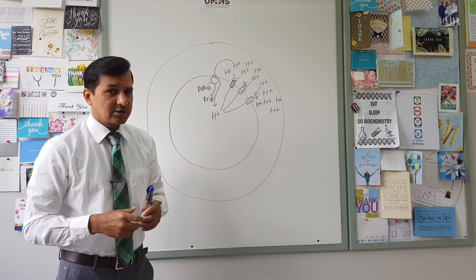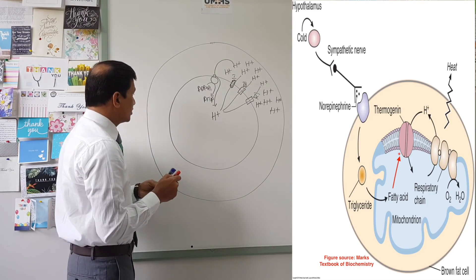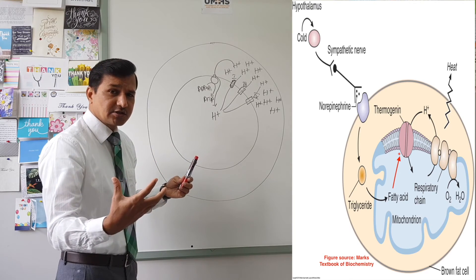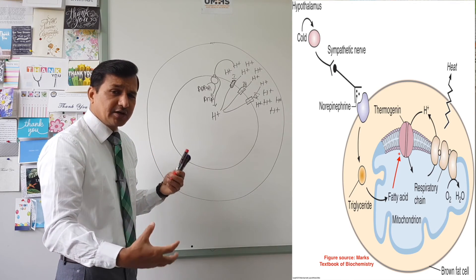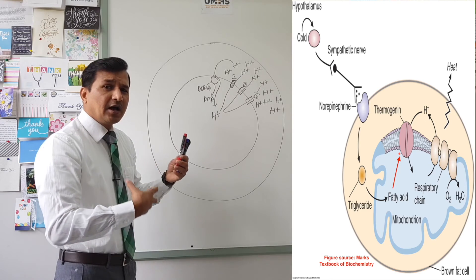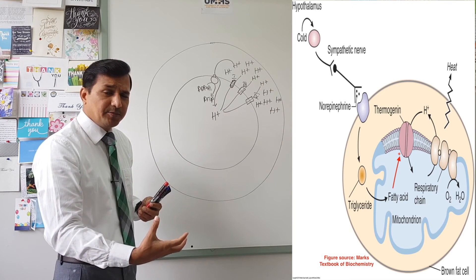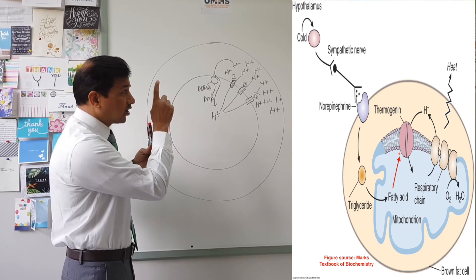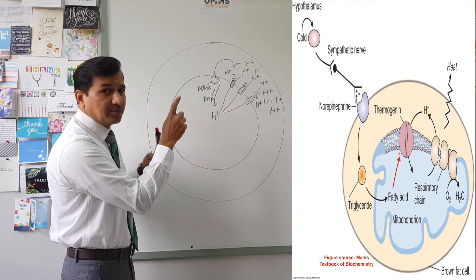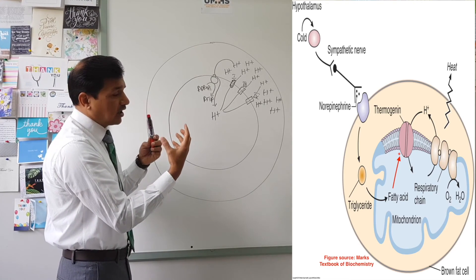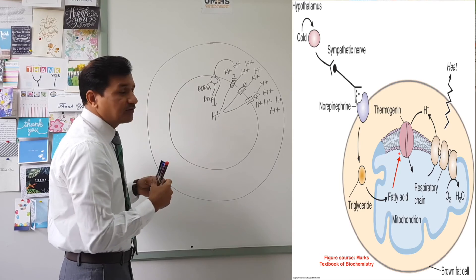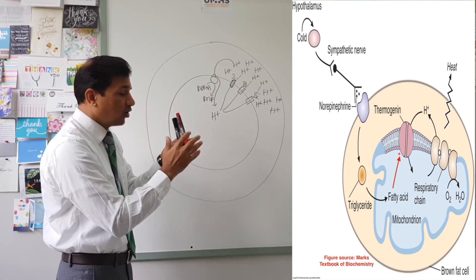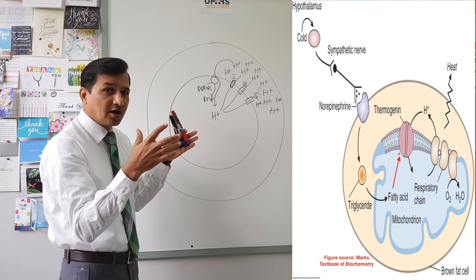Now, what happens when we are exposed to cold? Cold stimulates the sympathetic nervous system to release norepinephrine. Norepinephrine binds to its receptor, activates hormone-sensitive lipase, and releases free fatty acids. As shown in the figure: cold → norepinephrine → beta-adrenergic receptors → hormone-sensitive lipase → breakdown of triacylglycerol into free fatty acids. Those free fatty acids then open up the thermogenin, or uncoupling protein.